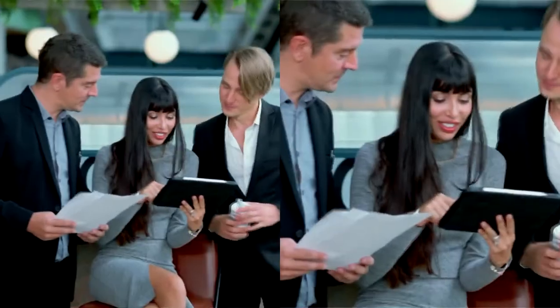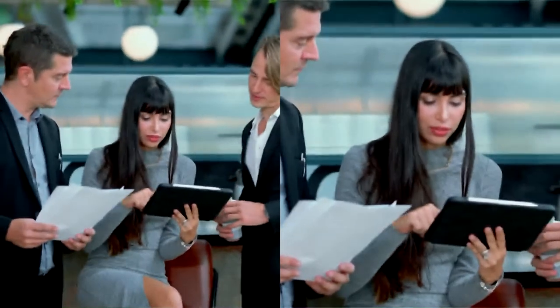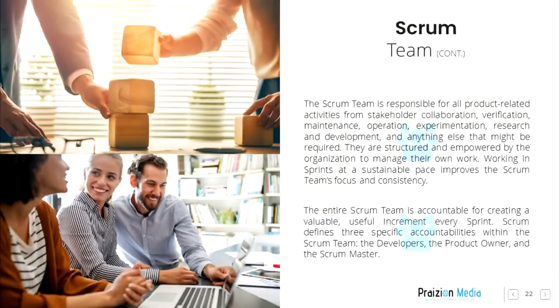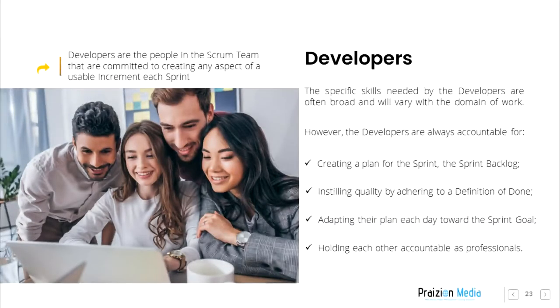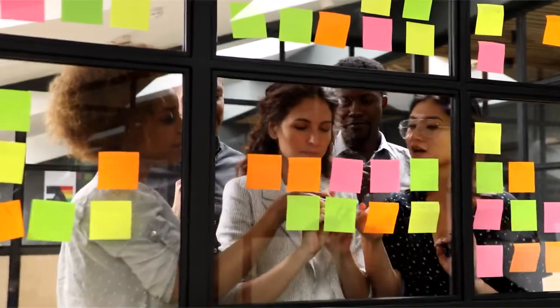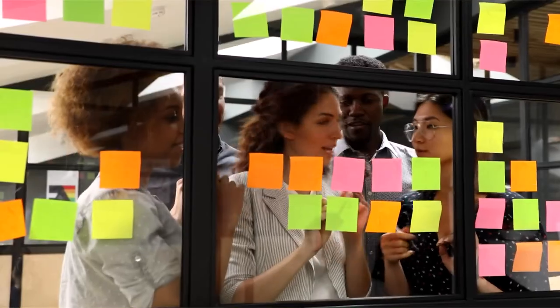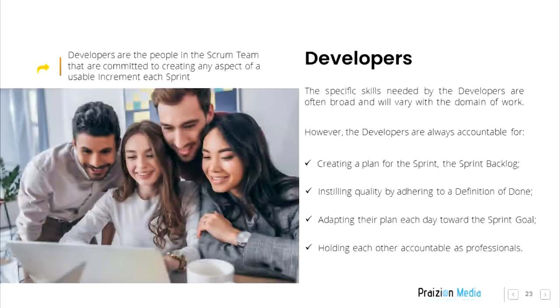Scrum defines three specific accountabilities within the Scrum Team: the developers, the product owner, and the Scrum Master. Developers. Developers are the people in the Scrum Team that are committed to creating any aspect of a usable increment each Sprint. The specific skills needed by the developers are often broad and will vary with the domain of work. However, the developers are always accountable for creating a plan for the Sprint — the Sprint Backlog — instilling quality by adhering to a definition of done, adapting their plan each day towards the Sprint Goal, and holding each other accountable as professionals.